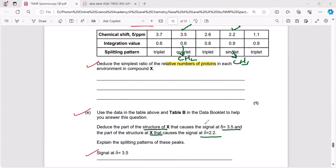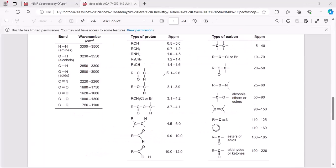Now let's open Data Booklet and try to figure out signal at chemical shift 3.5 and chemical shift at 2.2 of proton NMR. So chemical shift 3.5 and 2.2, so 2.2 comes here while 3.5 comes here.